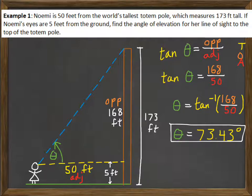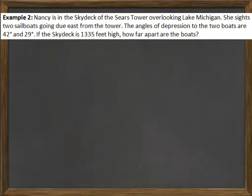Let's try a little bit more complicated of a question. In this example, Nancy is in the sky deck of the Sears Tower overlooking Lake Michigan. She sees two sailboats going due east from the tower. The angles of depression to the two boats are 42 degrees and 29 degrees. We also know that the sky deck is 1,335 feet high. We want to know how far apart are the boats.